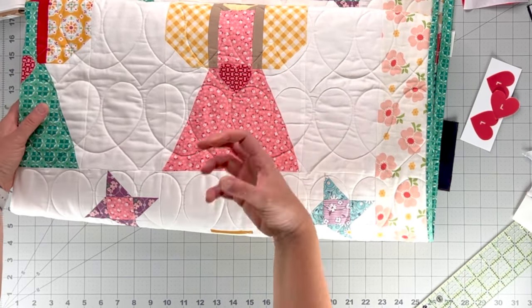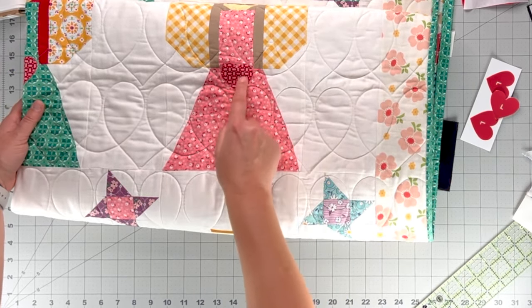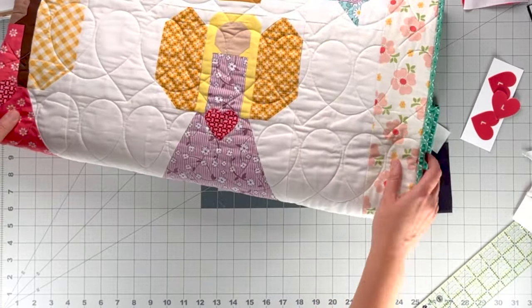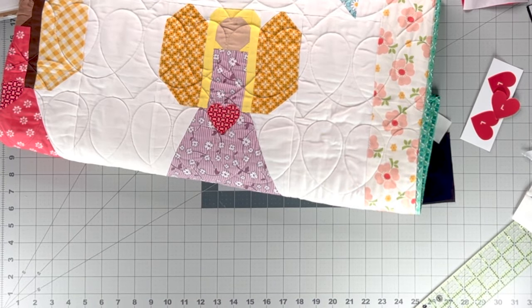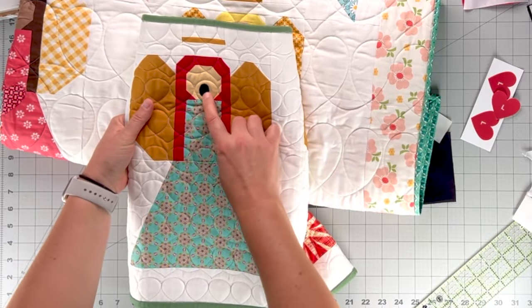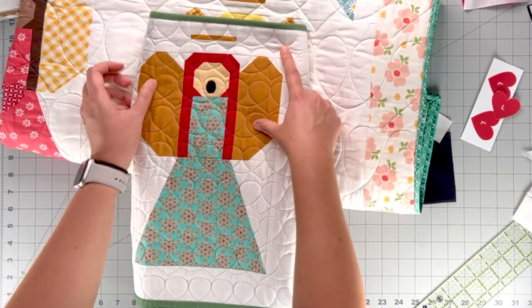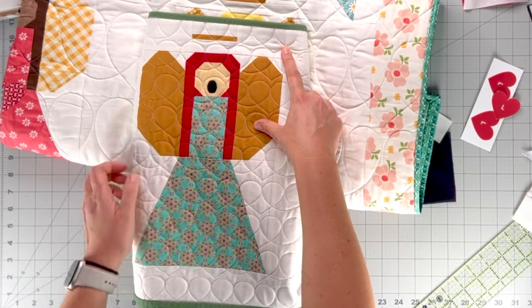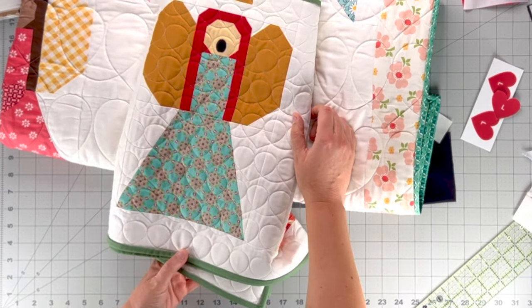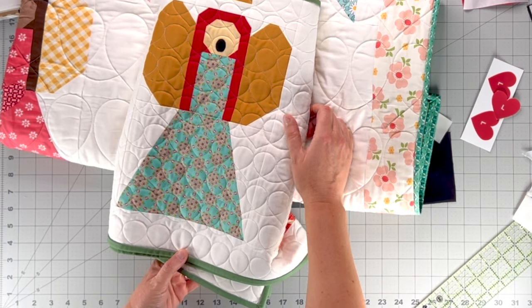And then the heat and bond that's fused to the back of it kind of helps prevent it from unraveling. And I think it looks very nice. And again, on this girl, I just went around it with a straight stitch. But you could certainly do a blanket stitch there as well. And that will hold it down to the block and we don't have to worry about that applique coming off.